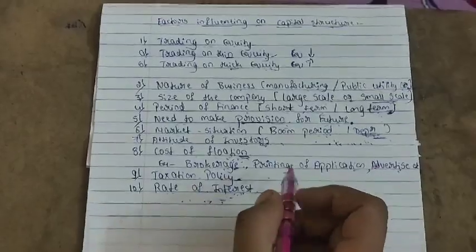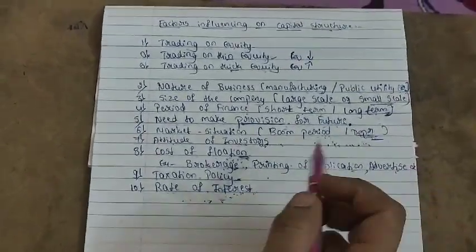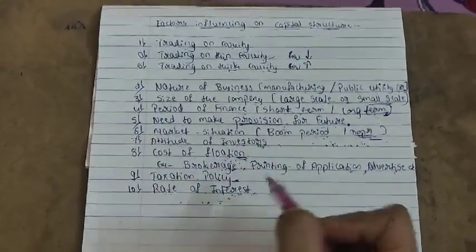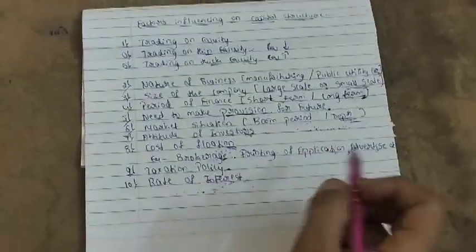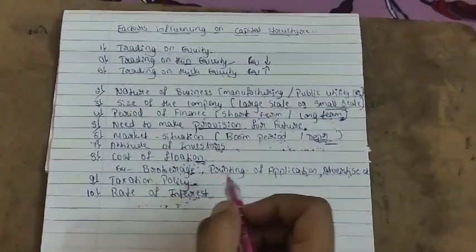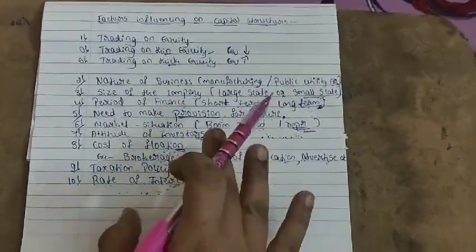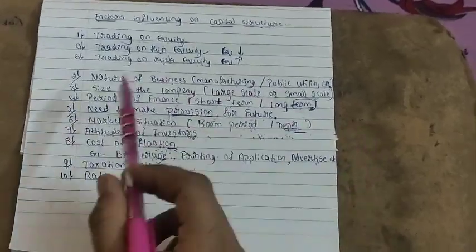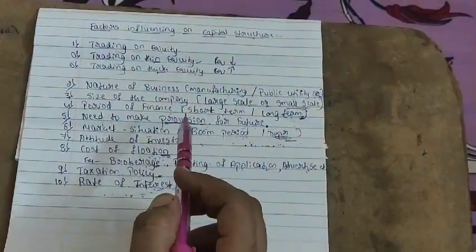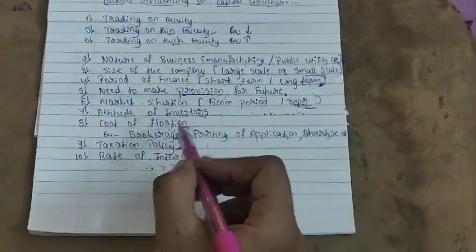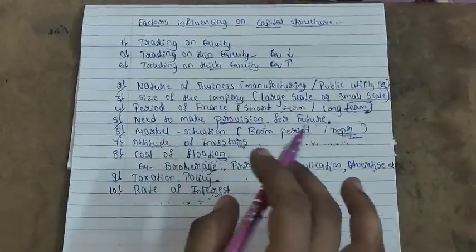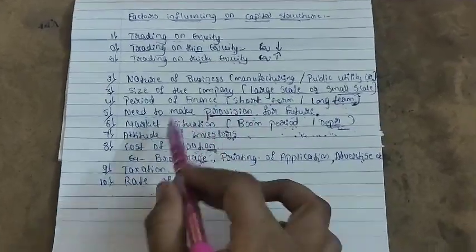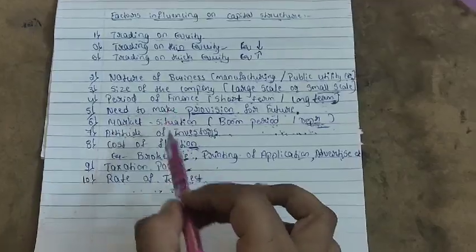In summary, a company collects funds through equity, debentures, or a combination of both in proper proportion. The ultimate effect on equity shareholders is measured by EPS — earnings per share. Capital structure is a mixture of equity and debt, and how the company makes that combination depends on all these influencing factors.